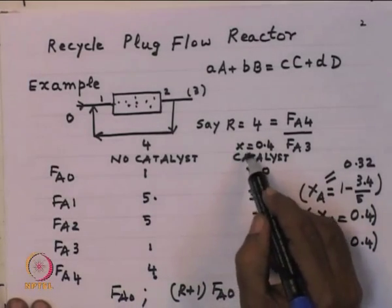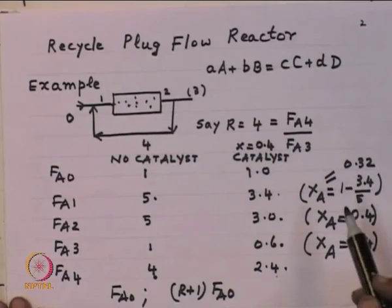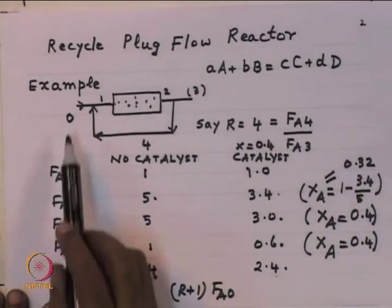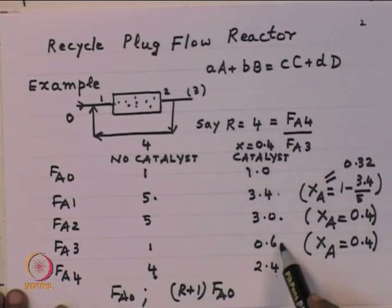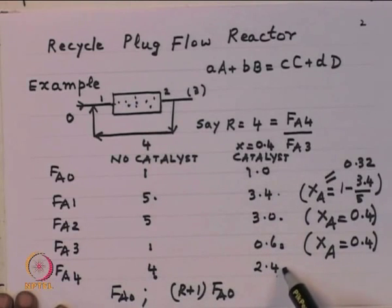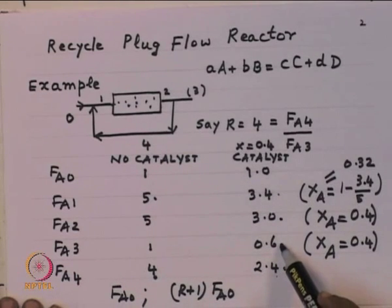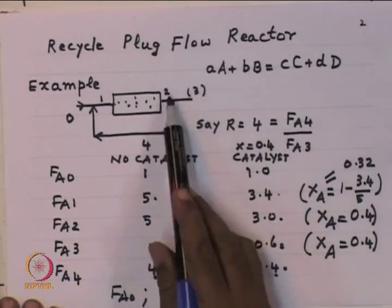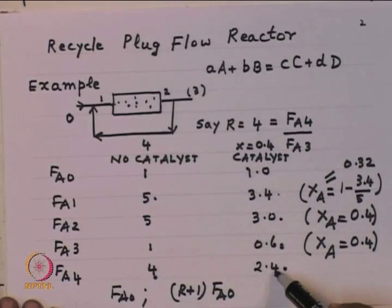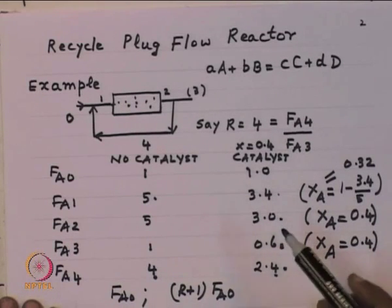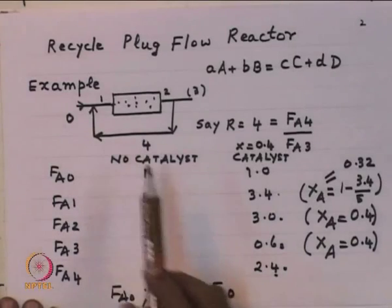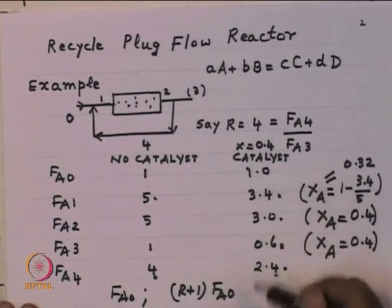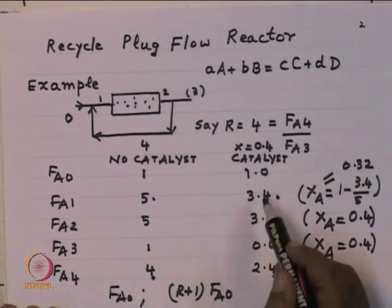Now let us say there is an extent of reaction with X = 0.4, meaning out of 1 unit coming in at position 0, 0.4 reacts, so the balance is 0.6. At position 4: 4 × 0.6 = 2.4. At position 3: F_A2 = F_A4 + F_A3 = 2.4 + 0.6 = 3. F_A1 = F_A0 + F_A4 = 3.4. This tells us based on material balance what the flows are at different positions.